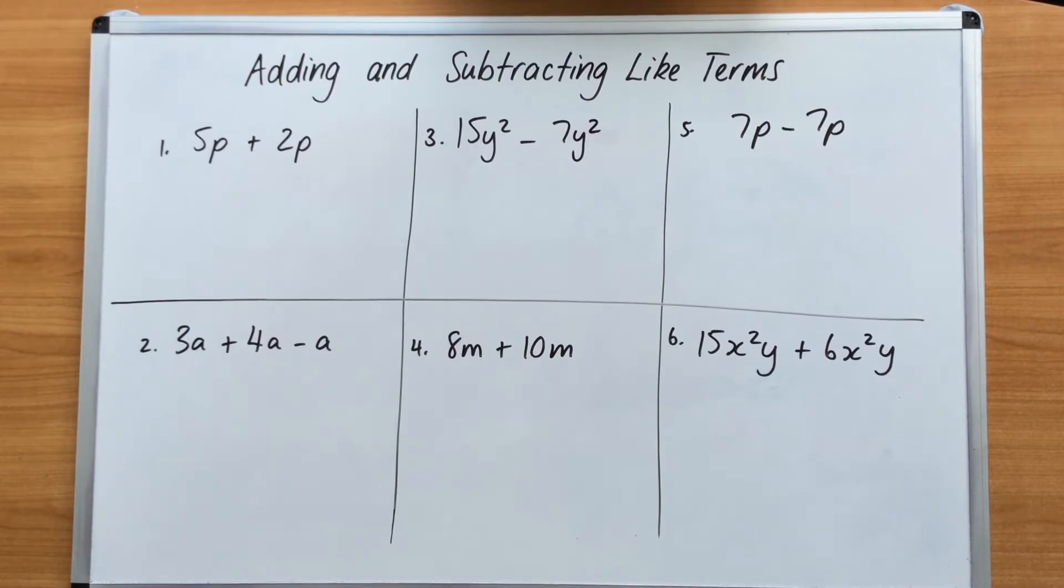So let's take some more examples of this adding and subtracting like terms. We've got 6 examples here. I'm going to take you through them. We'll start at number 1, of course. This is a very simple one here. You've got 5P plus 2P. It's like saying 5 parrots plus 2 parrots, and you've got 7 parrots. So the answer is 7P.